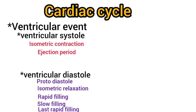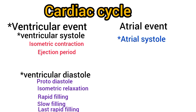Let us describe the atrial events. The first one is the atrial systole. Atrial systole is also known as the last rapid filling phase. It is usually considered as the last phase of ventricular diastole. Its duration is 0.11 seconds. During this period, only a small amount of blood is forced from the atria into the ventricles.